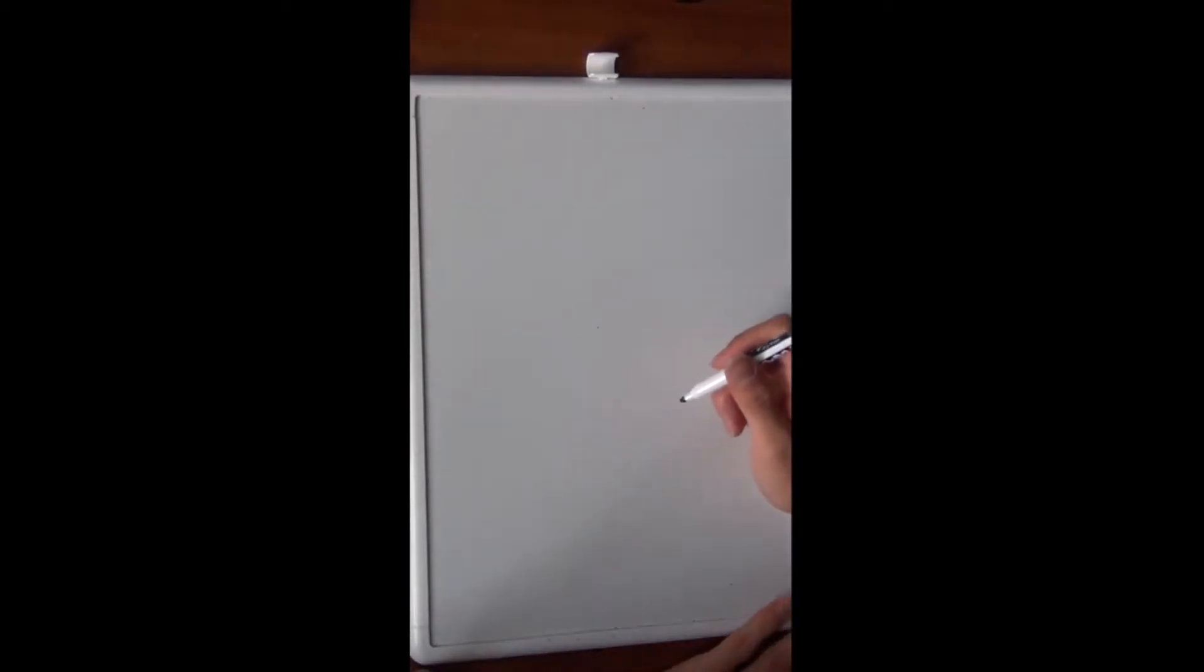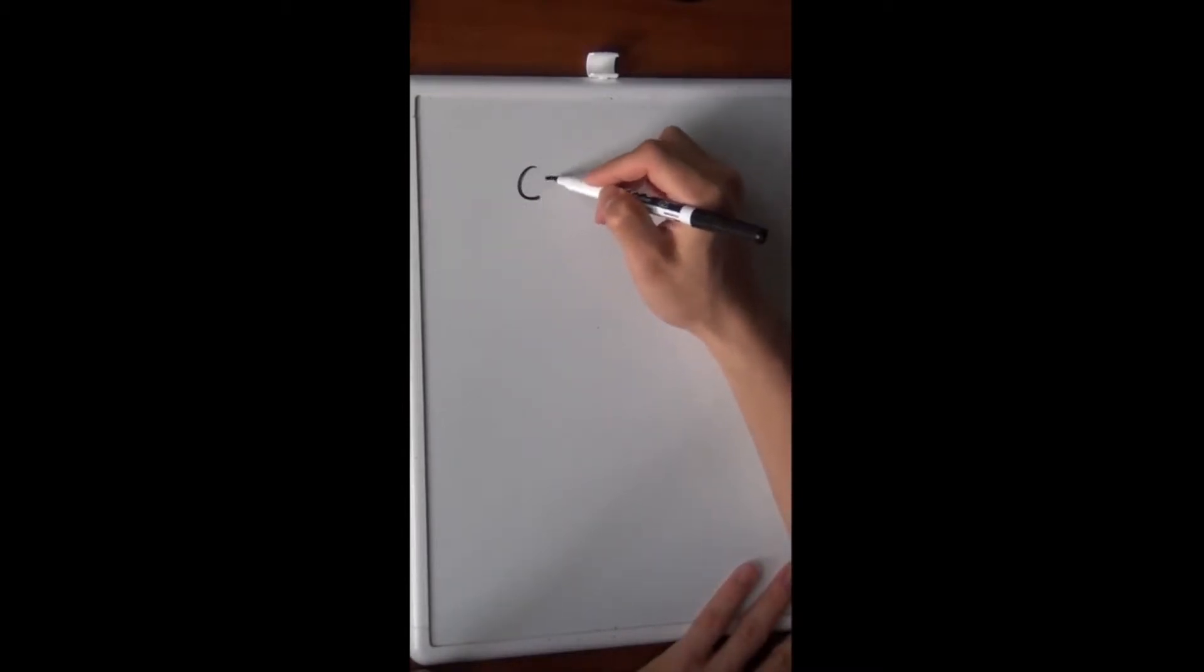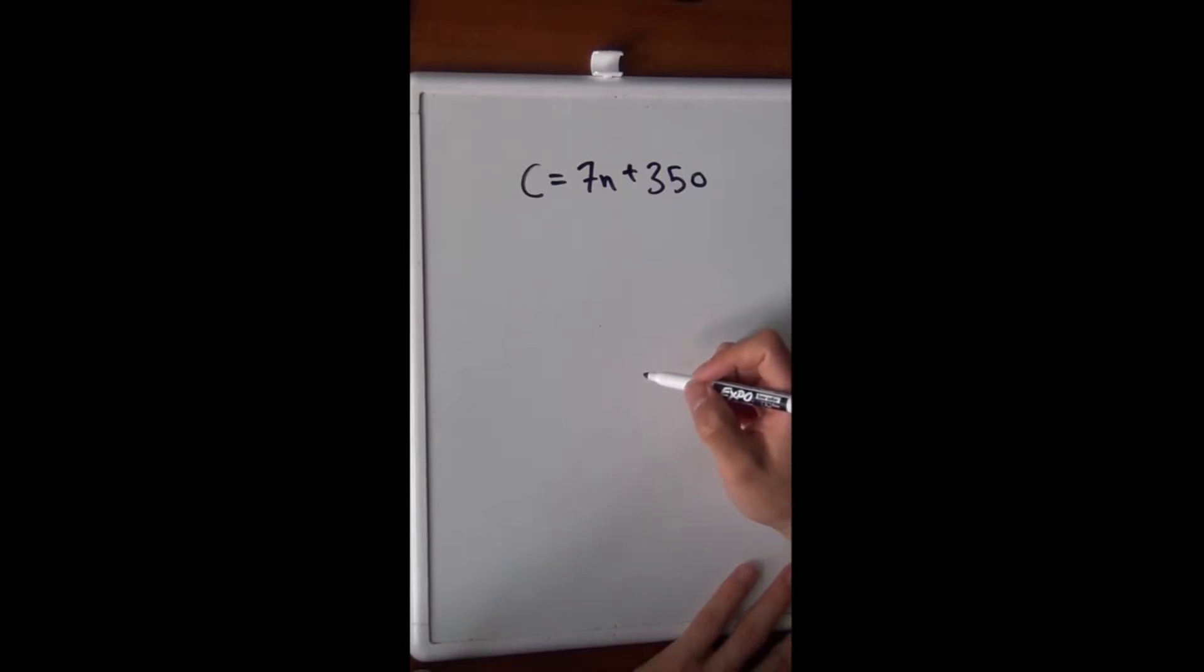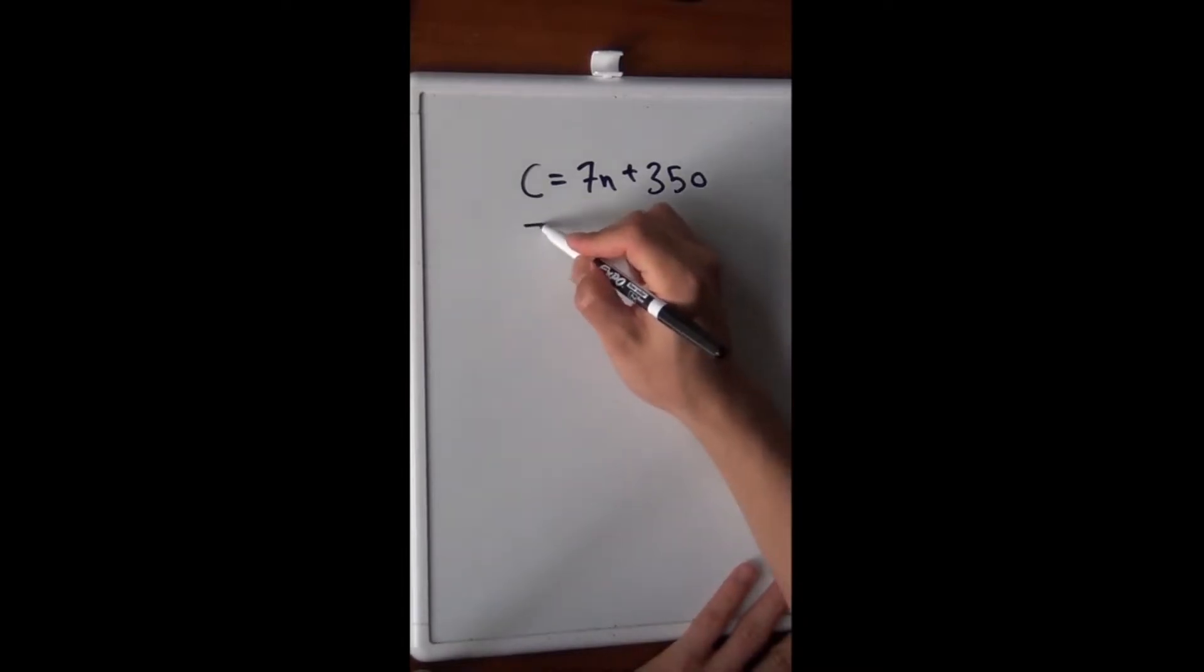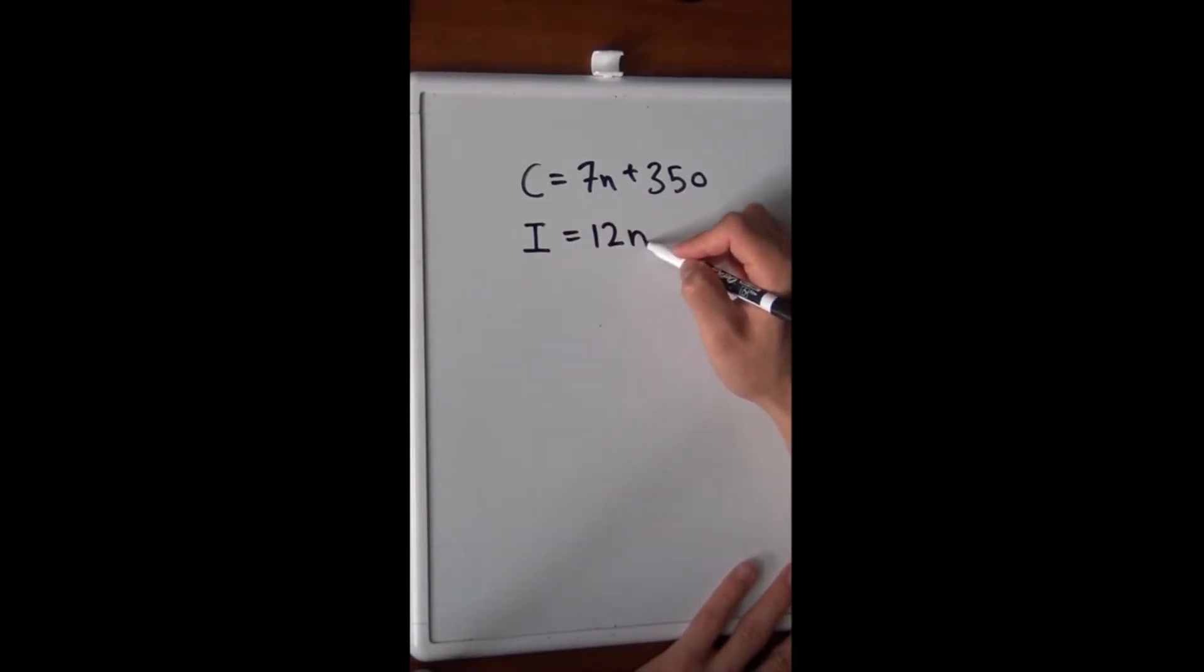All right. Question three is about another algebraic inequality problem. We have a cost of producing n items and we need to generate a profit. And we know that the income for each item is $12. So let's set up another equation for that. Income is $12 per item n.